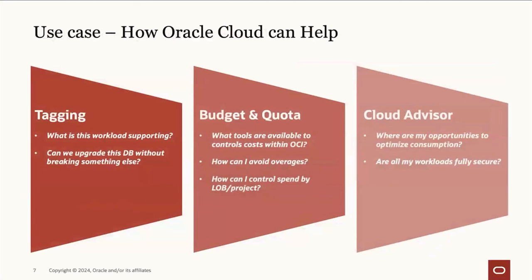Talking about tagging use cases: if you have a hundred databases running and ten percent are on older versions, it's crucial to understand what application each database supports. When the business decides everything needs to be updated to 19c, you need to know what that database is supporting, who's in charge of it, and when you can do the upgrade without causing an outage to that application.